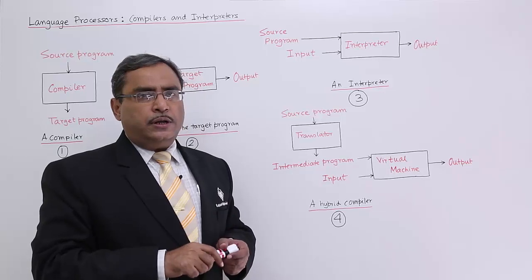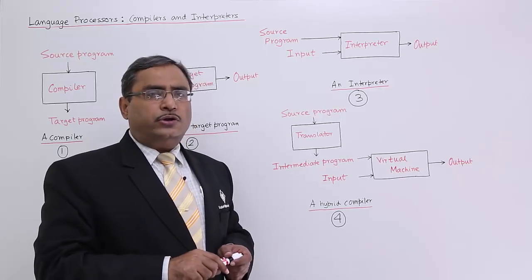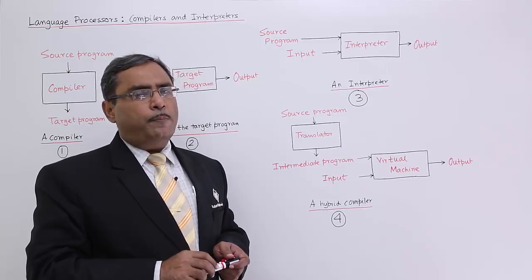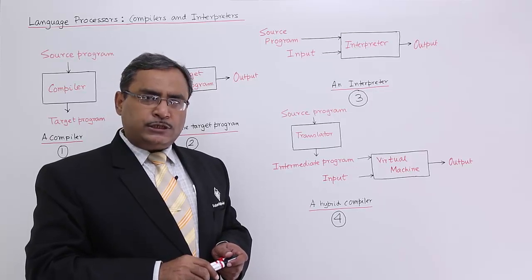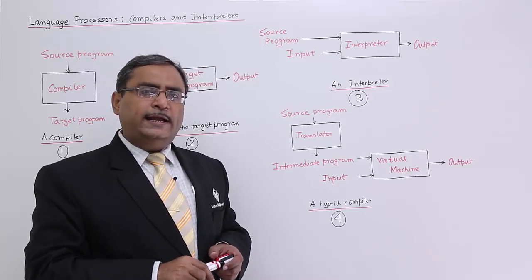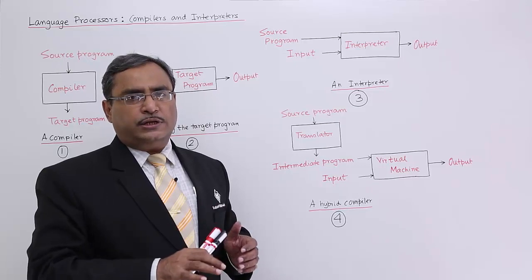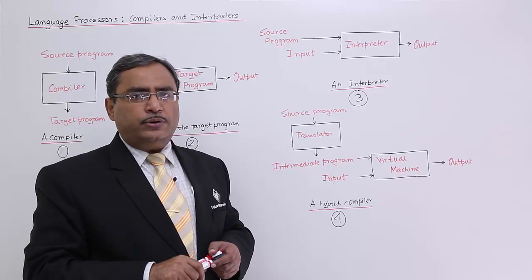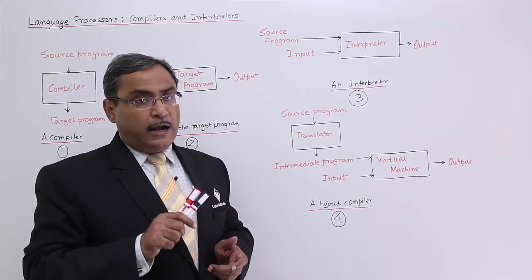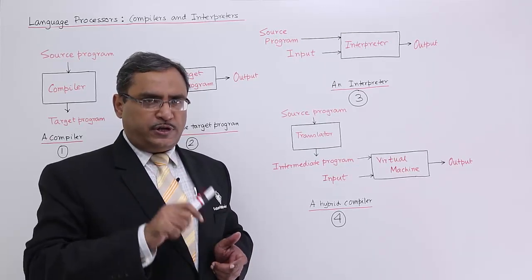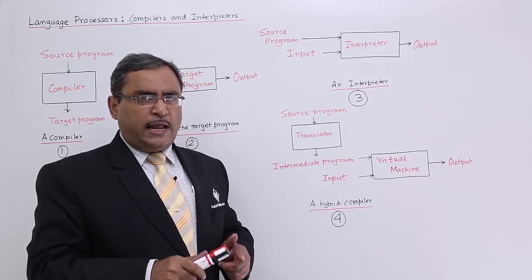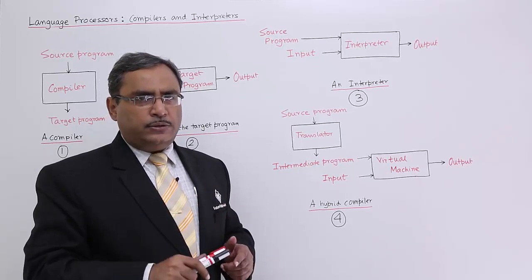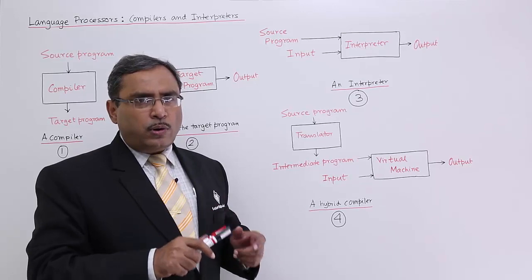In case of an interpreter, during program execution, translation is also taking place. So the interpreter will work a little bit slower compared to a compiler, because in case of a compiled program, when it gets executed, translation is not taking place. But here, each and every statement prior to getting executed must be translated to some intermediate language, and then the statement gets executed. As execution and translation take place side by side, a program executed through an interpreter will have slower execution.